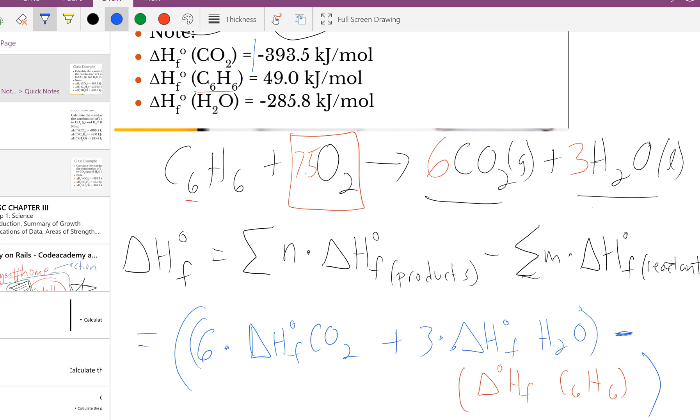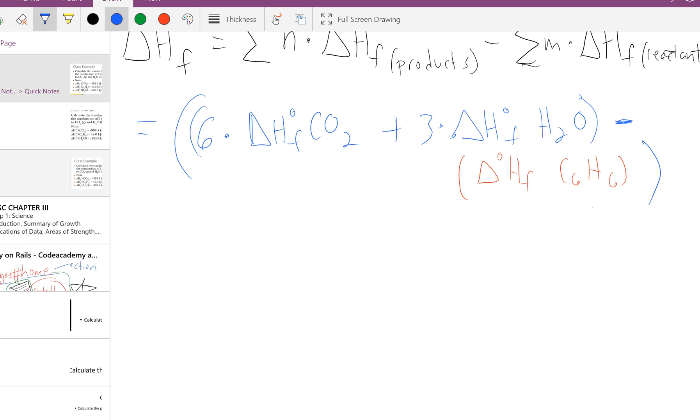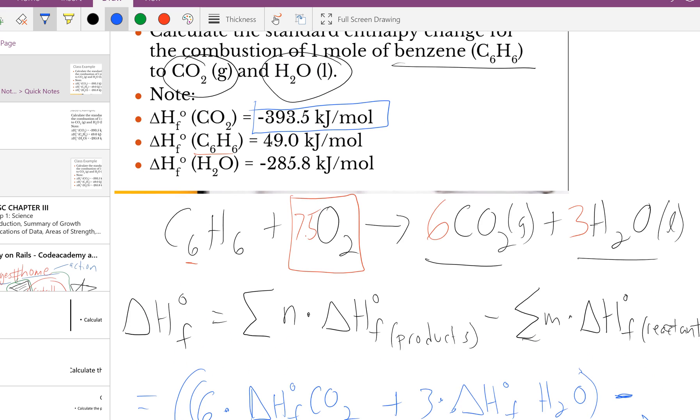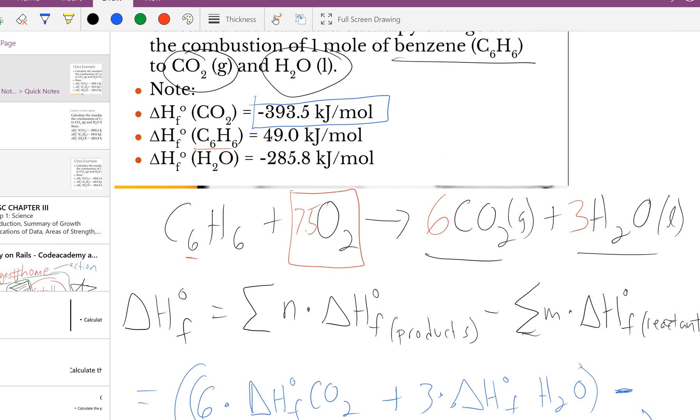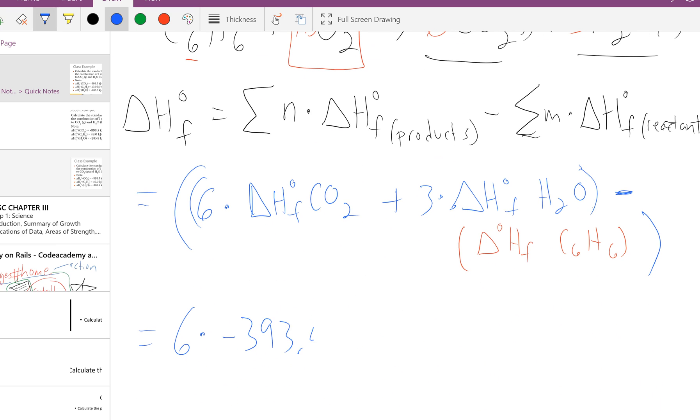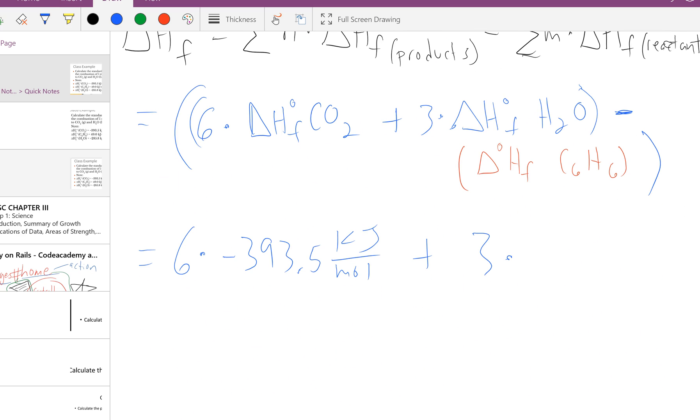This is not that hard since the values are already given. This equals 6 times negative 393.5 kilojoules per mole plus 3 times negative 285.8 kilojoules per mole.